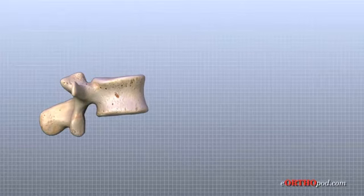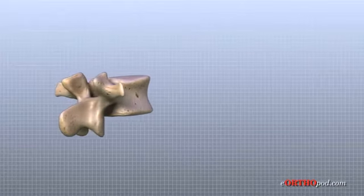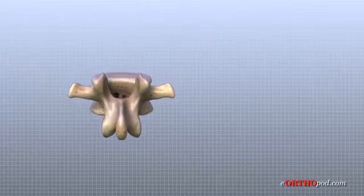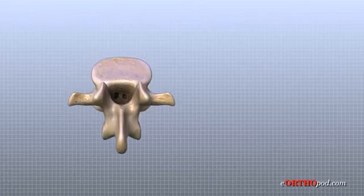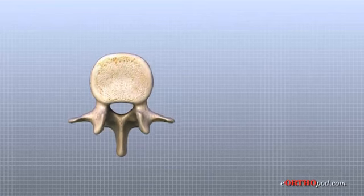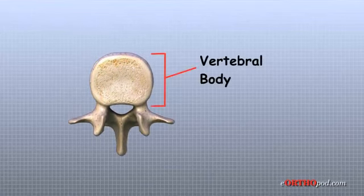Each vertebra is formed by a round block of bone called a vertebral body. The lumbar vertebral bodies are taller and bulkier compared to the rest of the spine. This is partly because the lumbar spine has to withstand pressure from body weight and from daily actions like lifting, carrying, and twisting.